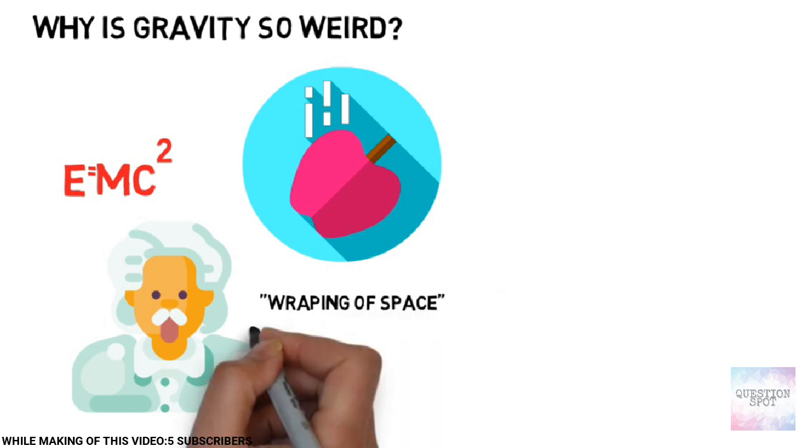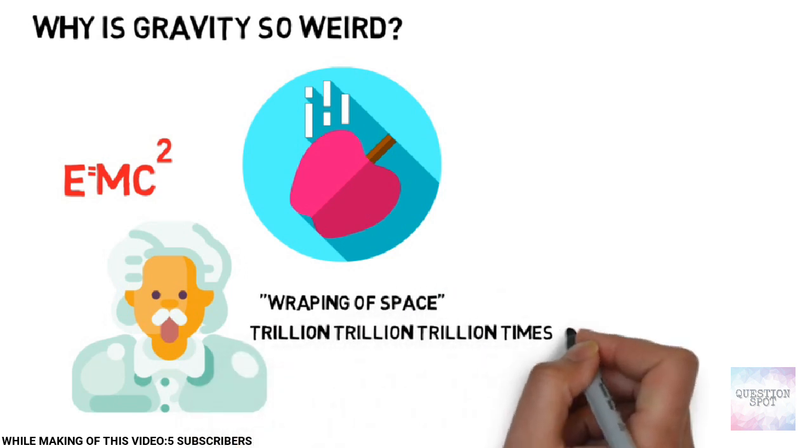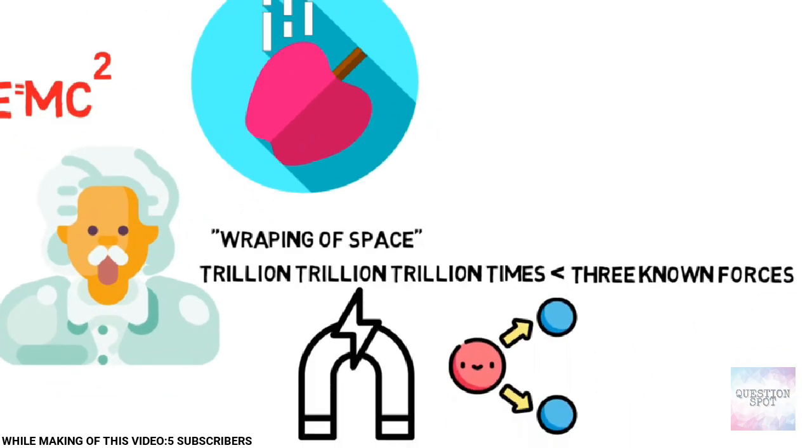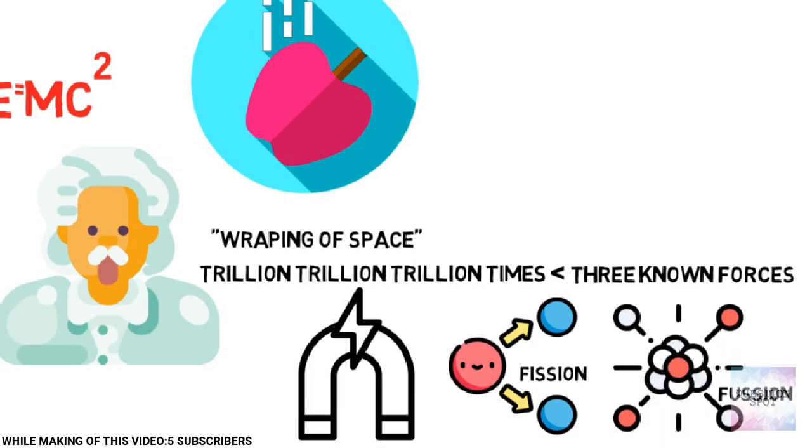But gravity is a trillion trillion trillion times weaker than the other three known forces: electromagnetism and the two kinds of nuclear forces that operate over tiny distances.